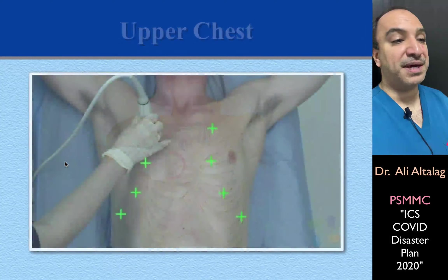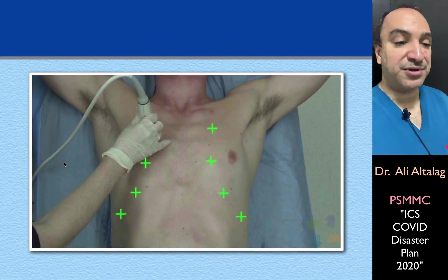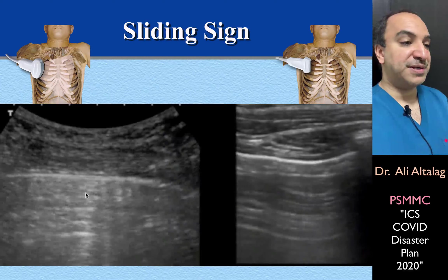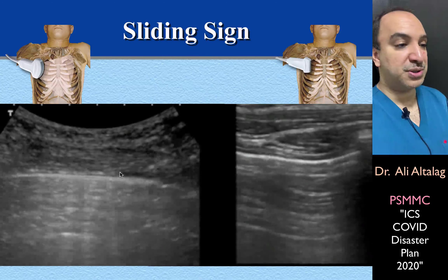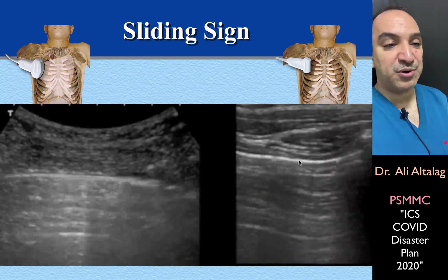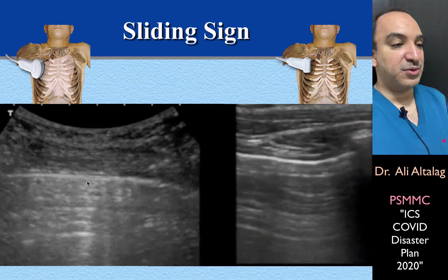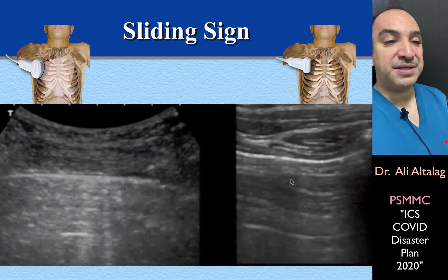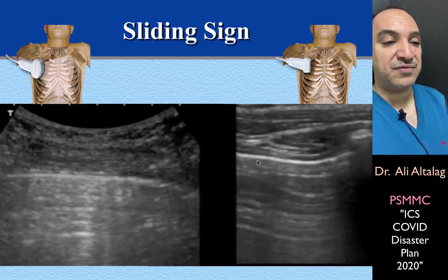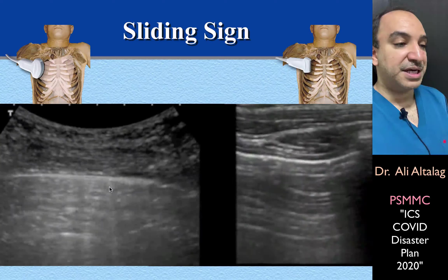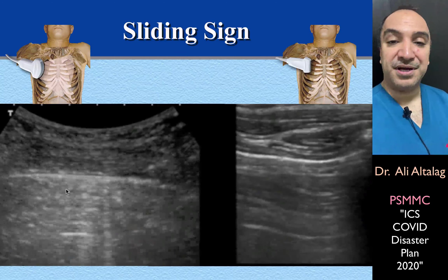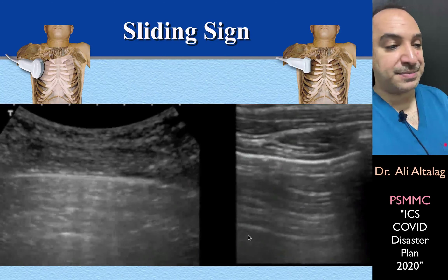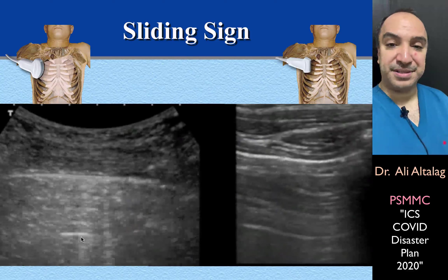We examine for certain things and compare as we move the transducer down. Normally, you can notice a sliding motion of the pleura — this is called the sliding sign. The presence of sliding pleura or sliding sign rules out pneumothorax beneath your transducer. The second sign is B-lines — lines that start from the pleura going all the way down. B-lines also rule out pneumothorax; their presence makes pneumothorax extremely unlikely beneath your transducer. A-lines become more prominent in pneumothorax. These are three important signs you should remember.